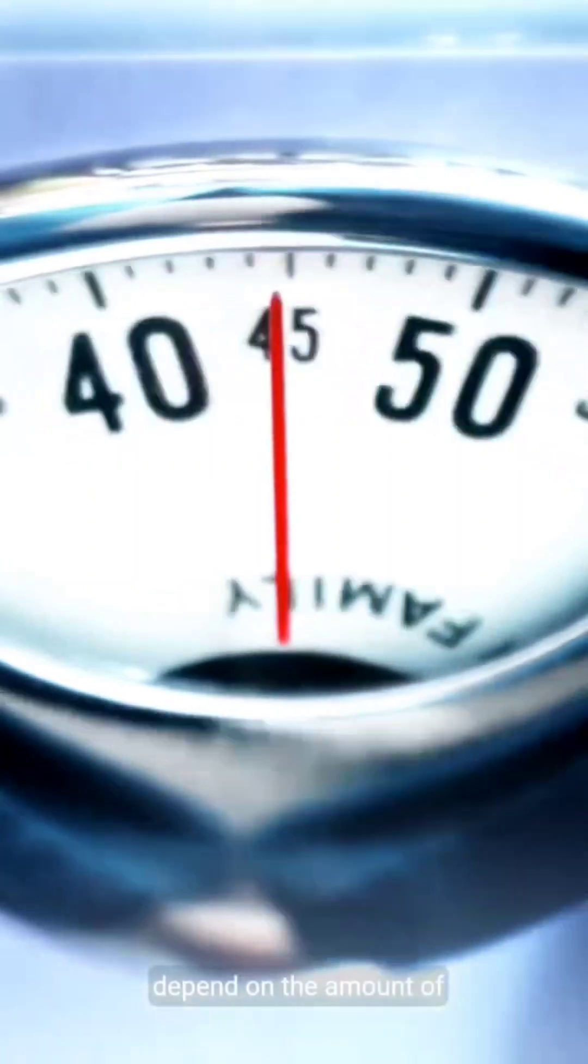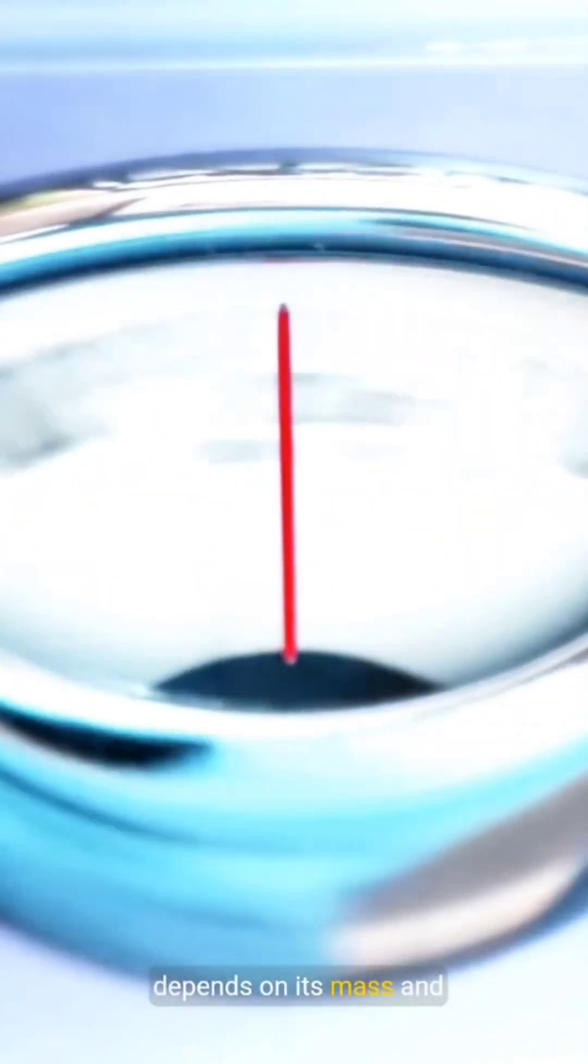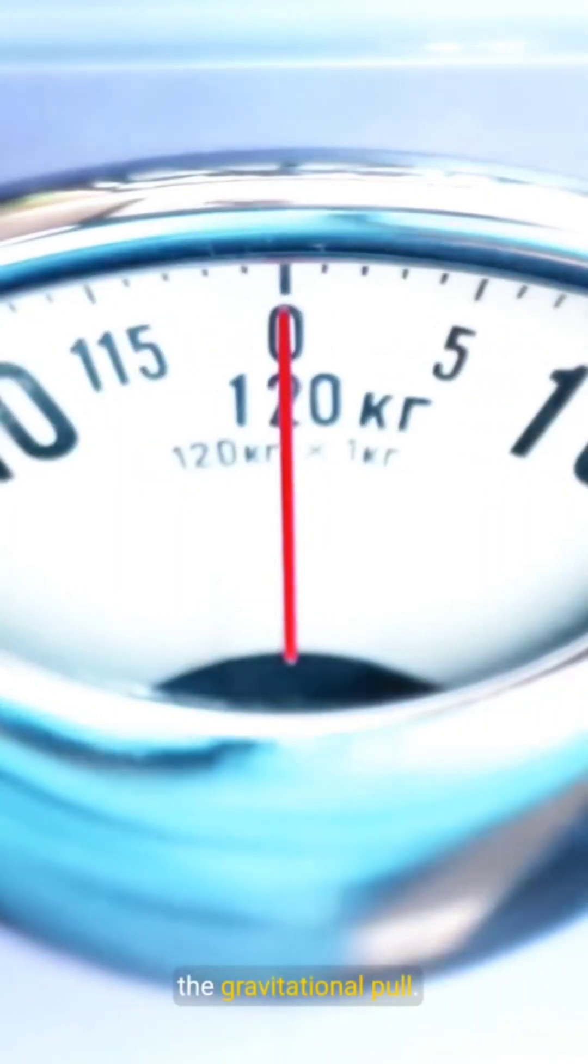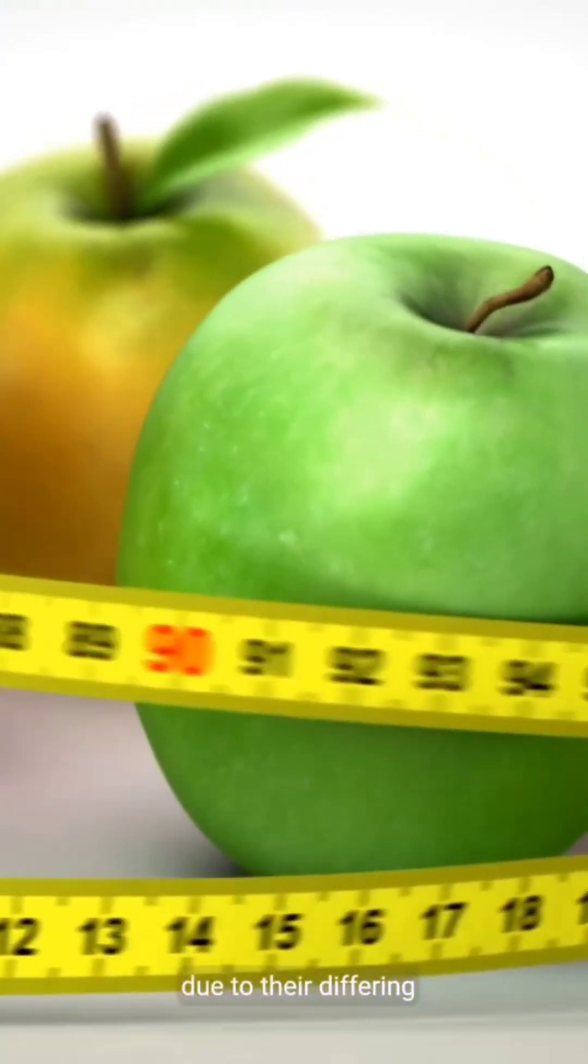On the other hand, extrinsic properties depend on the amount of matter. For example, the weight of an object depends on its mass and the gravitational pull. A small apple weighs less than a large watermelon due to their differing masses.